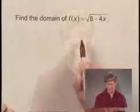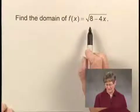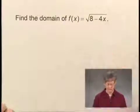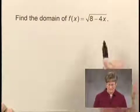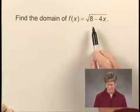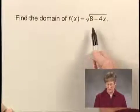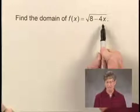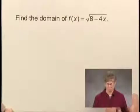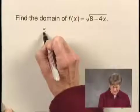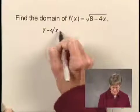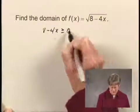In this exercise, we'll find the domain of a function. The function is f(x) equals the square root of 8 minus 4x. The domain of this function is the set of all values of x for which the radicand 8 minus 4x is greater than or equal to 0. So we'll solve the inequality 8 minus 4x is greater than or equal to 0.